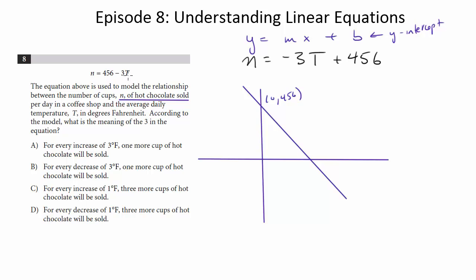But I guess t could be smaller than 0. But in any event, like when t is 0, here's the easier way to understand. When t is 0, when the temperature is 0 degrees, they sell 456 cups, right? So this b value basically just tells you when you're at 0 for whatever your x value is here, in this case t value, what is the value of n? And it's 456. So it's kind of what I would call like the starting point, the base point on which everything else is based in these kind of real life examples.